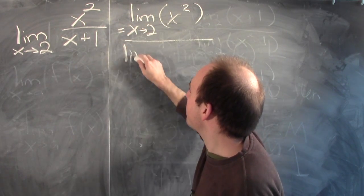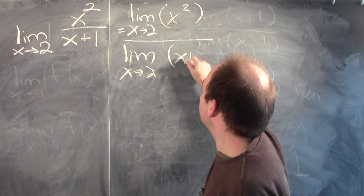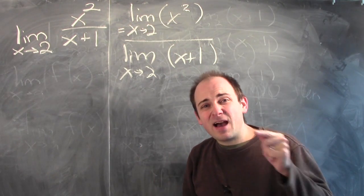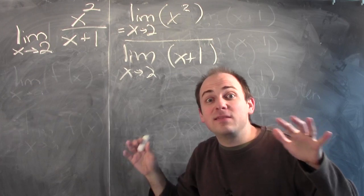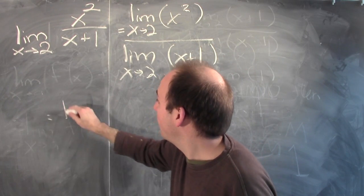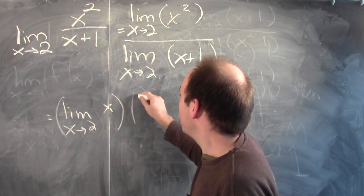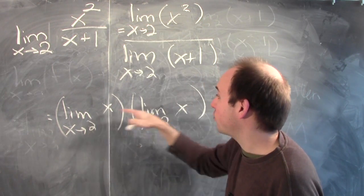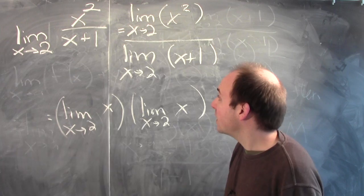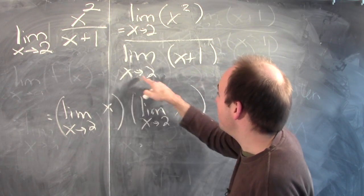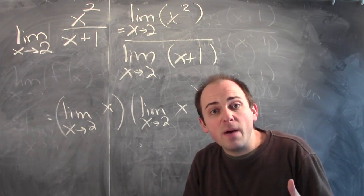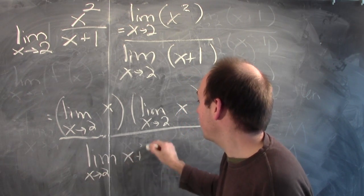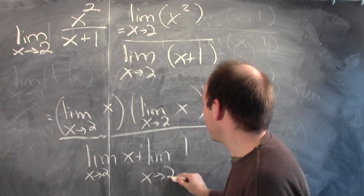So the limit of the quotient is the quotient of the limits. The numerator is the limit of x squared as x approaches 2. Since x squared is x times x, this is the limit of a product, and the limit of a product is the product of the limits. So I replace the limit of x squared with the limit of x times the limit of x, both as x approaches 2. The denominator is the limit of x plus 1 as x approaches 2, which is a limit of a sum. The limit of a sum is the sum of the limits: the limit of x plus the limit of 1 as x approaches 2.